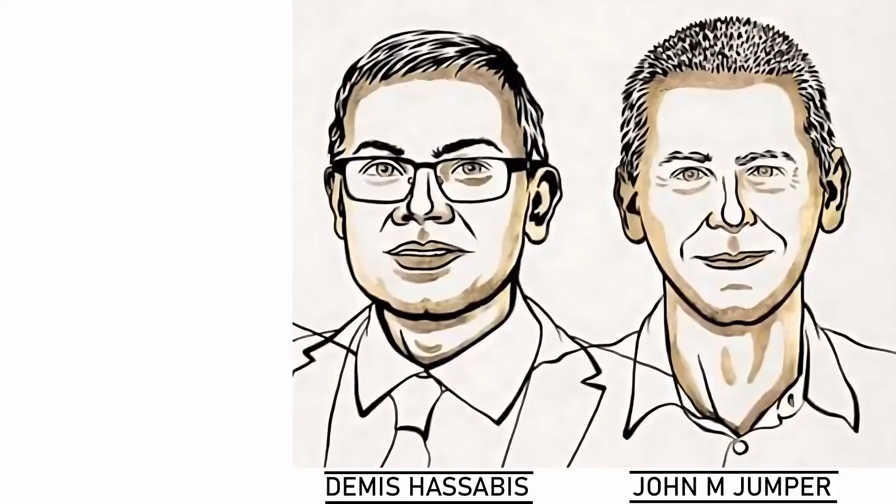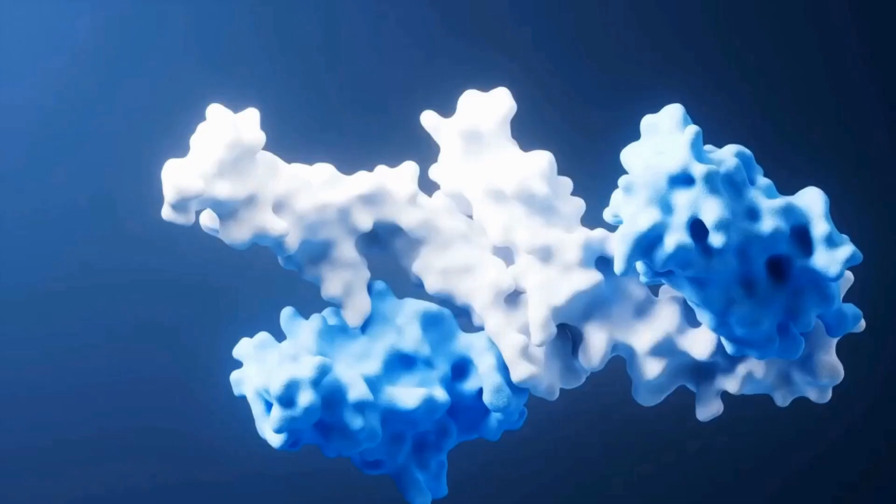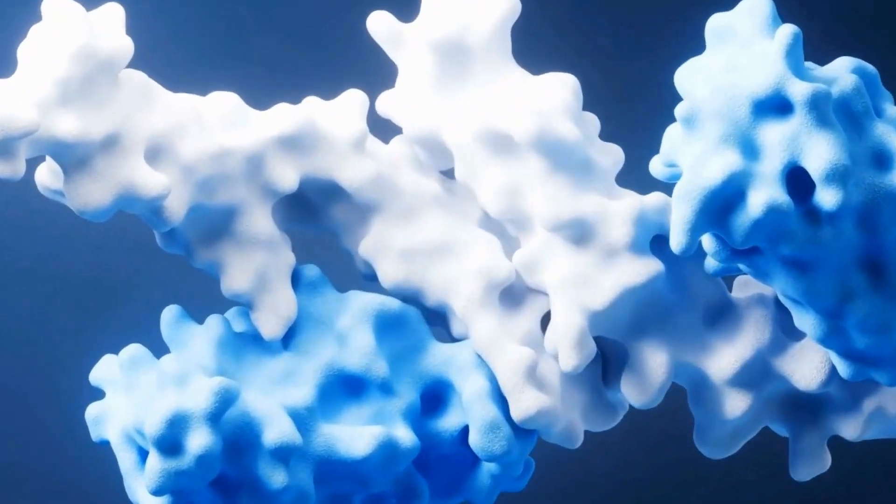Next up are Demis Hassabis and John Jumper from DeepMind, who brought artificial intelligence into the world of protein science. They developed AlphaFold 2, an AI model that can predict the 3D shape of a protein just from its sequence of amino acids, the building blocks that make up proteins.